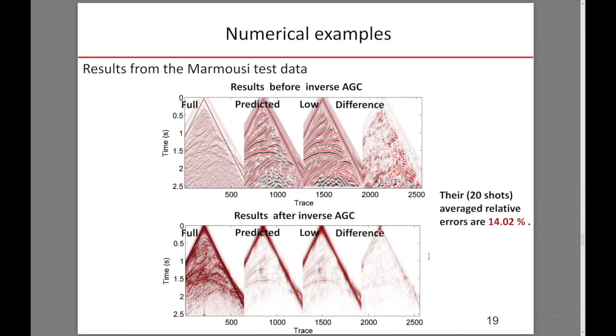We also observed its performance on test data. We notice that for the testing data, it can still make successful predictions. And the average relative errors are 14.02%.